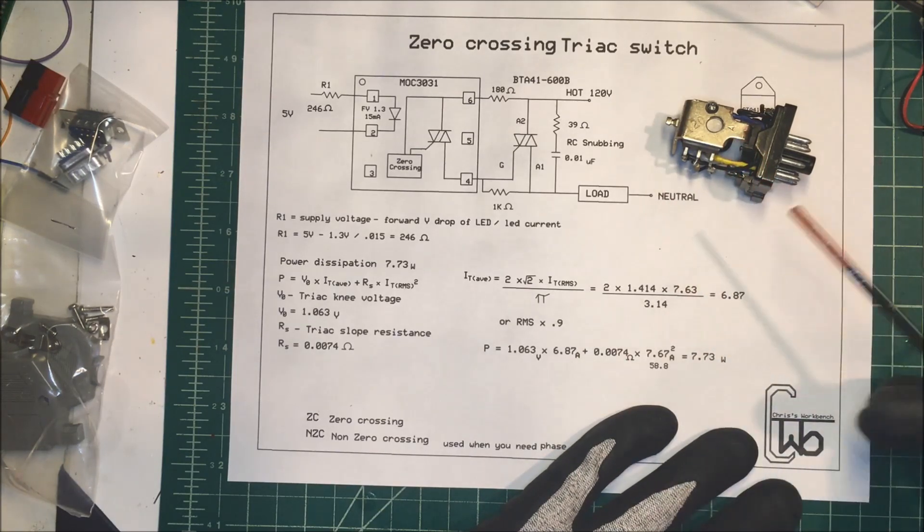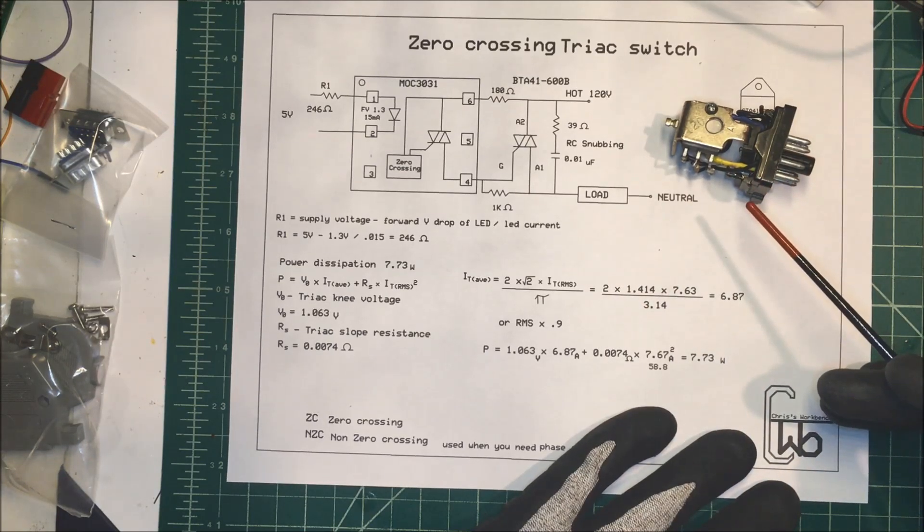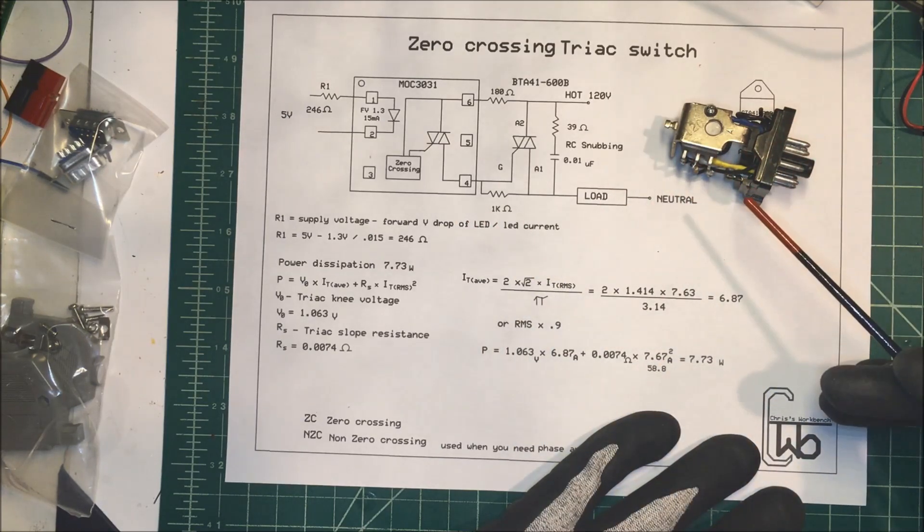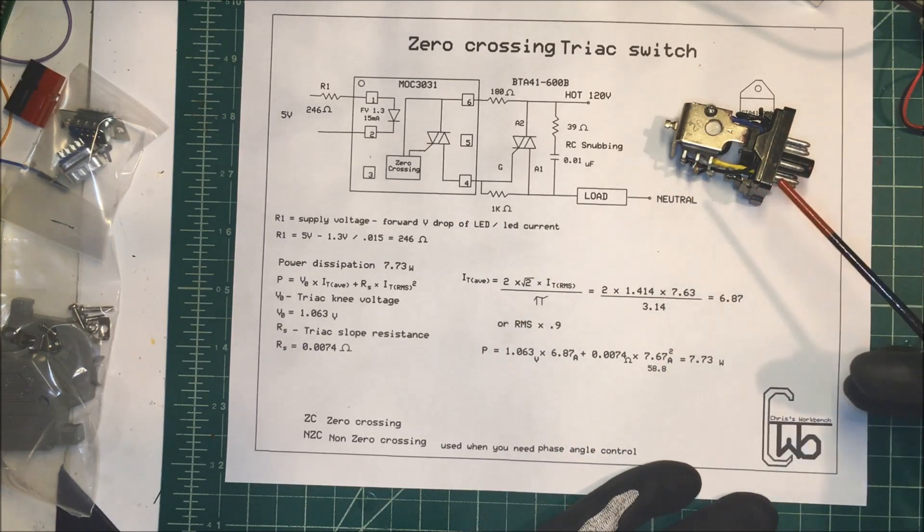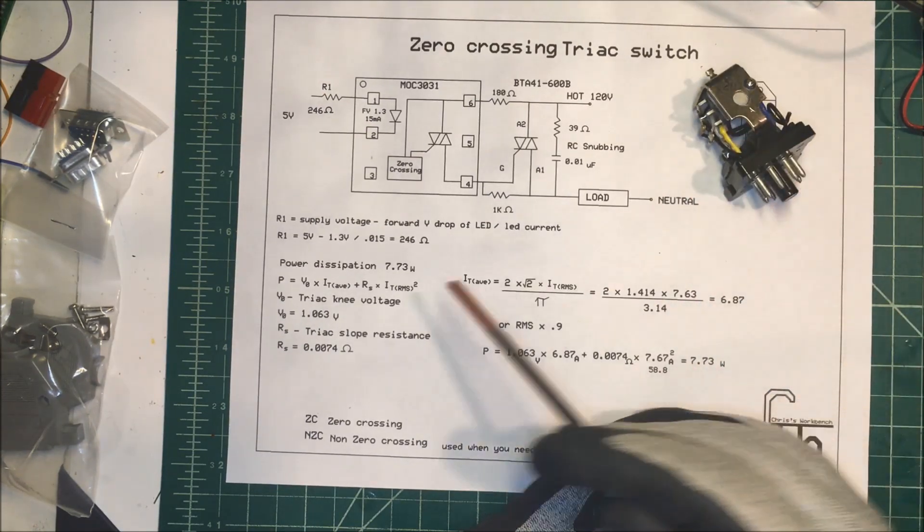So I decided to abandon the idea of the zero crossing and just go with a latching relay. I'm going to latch the relay in - I won't be wasting any power at all - and then unlatch it when I want to turn it off. And as far as the zero crossing, I'm just going to put a snubber circuit on the outside of that and it should work fine.